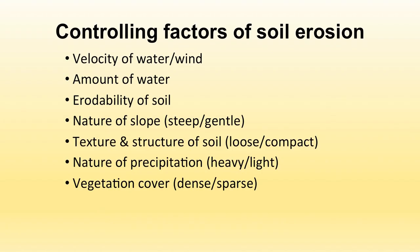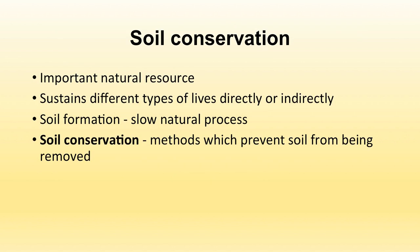The controlling factors of soil erosion are: velocity of water or wind, amount of water, erodibility of soil, nature of slope, texture and structure of soil, nature of precipitation, and vegetation cover. All these factors control the rate and extent of soil erosion.